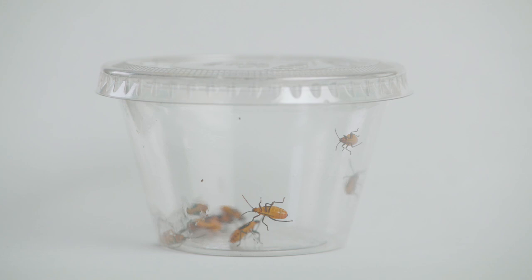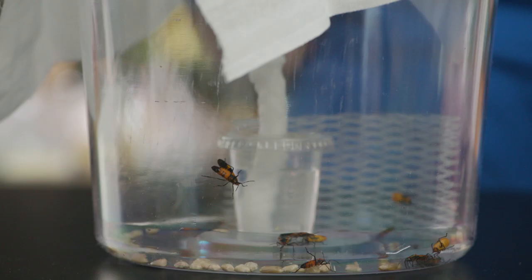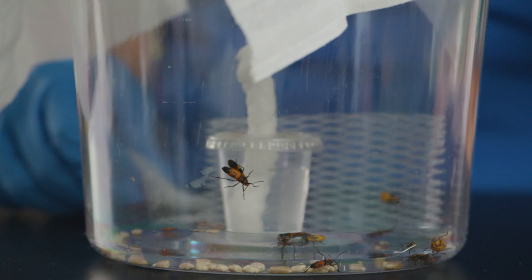Once your milkweed bugs begin to mature towards adulthood, in about 20 weeks, place cotton in the culture jar so that the adults can lay their eggs.